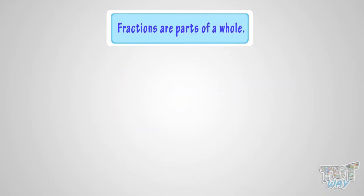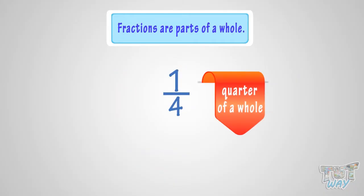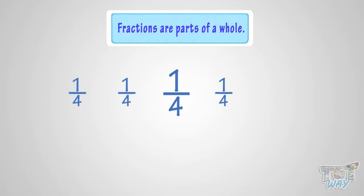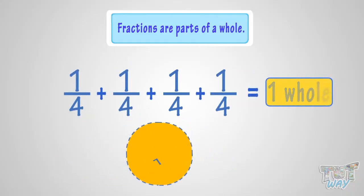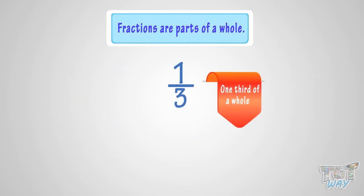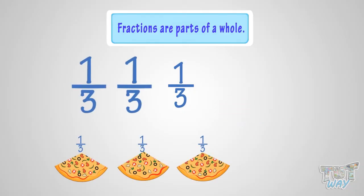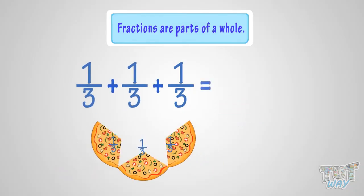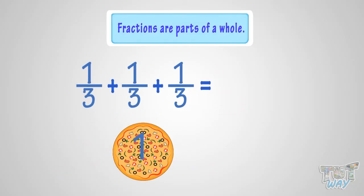One by four is a quarter of a whole, and four quarters make one whole. One by three is one-third of a whole, and three one-thirds make one whole.